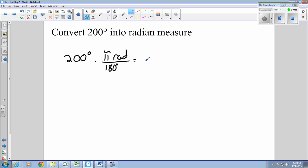That's going to give us our measurement in radians. Some math teachers like to leave it in fraction form and like to leave the pi. So, your answer would look like this. 10 pi over 9 radians.